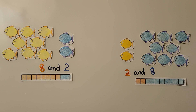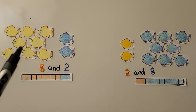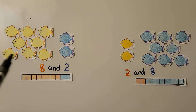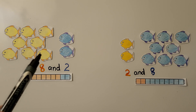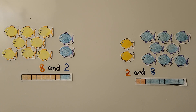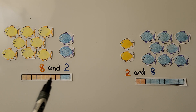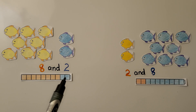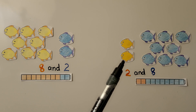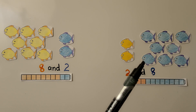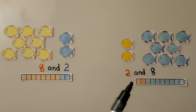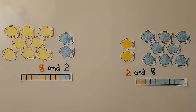Here we have some fish. We have one, two, three, four, five, six, seven, eight yellow fish and one, two blue fish. We can color eight cubes and then color two cubes blue. Eight and two is a number pair that makes 10. Here we have two orange fish and eight blue fish — we can color two orange and eight blue. Eight and two or two and eight are number pairs that make 10.